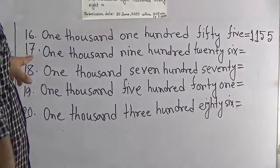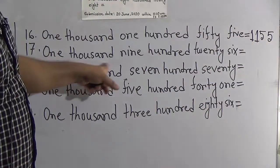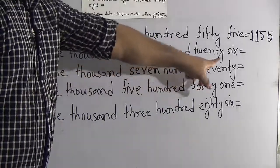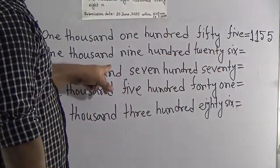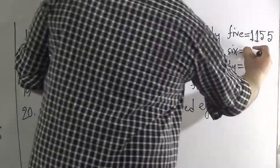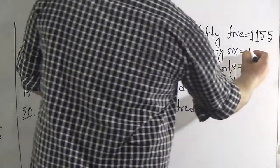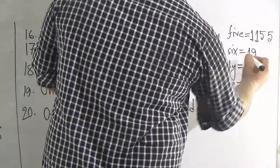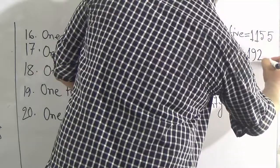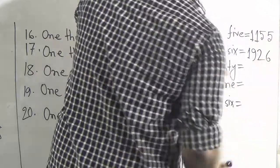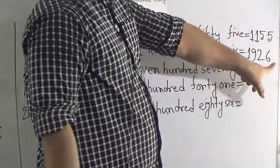Our next number is 1,926. 1,000 means 1, 900 means 9, and 26 means 2 and 6. So we write 1,926.